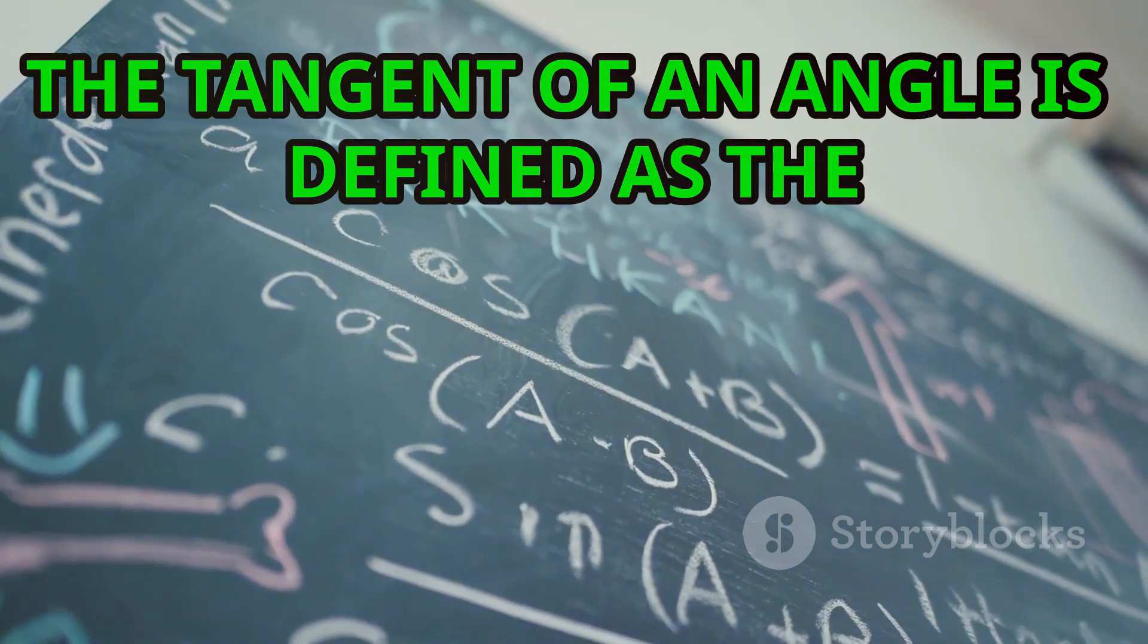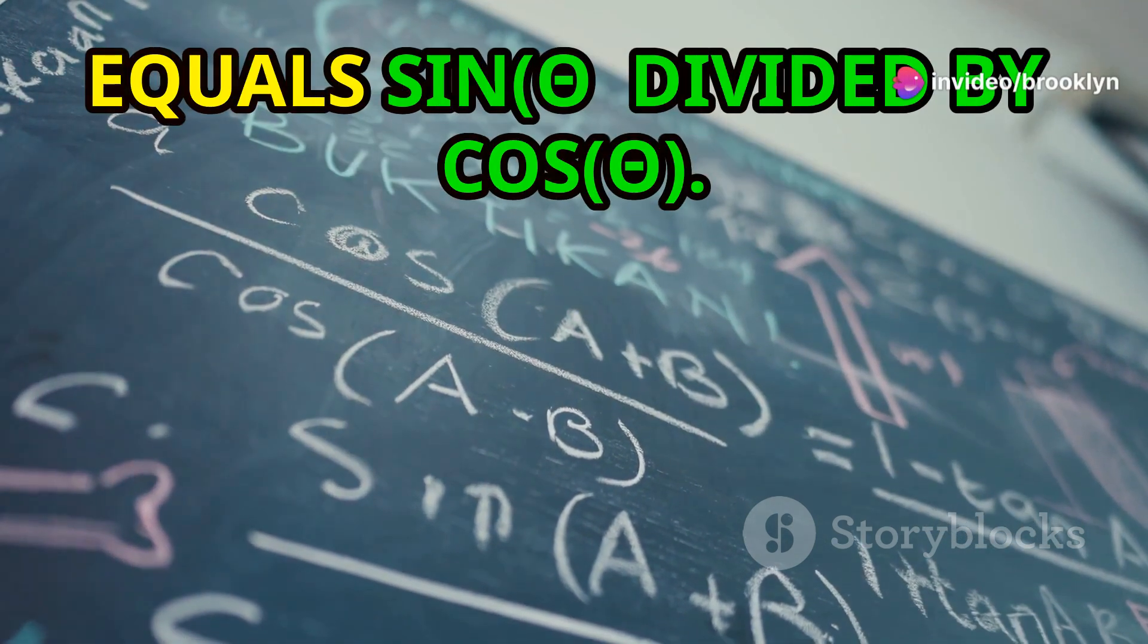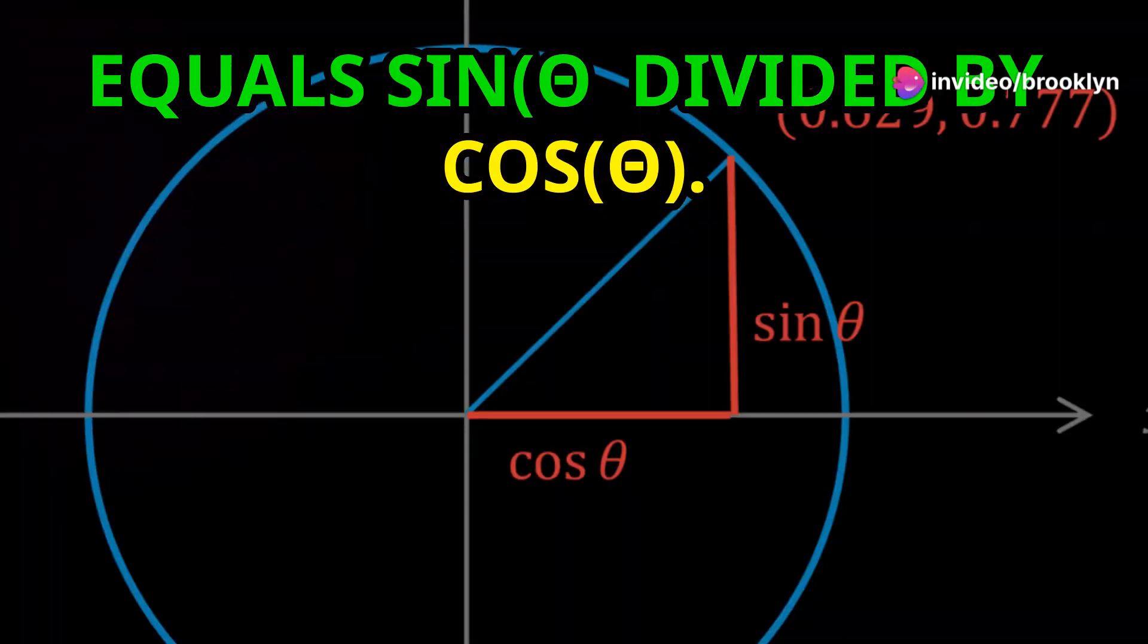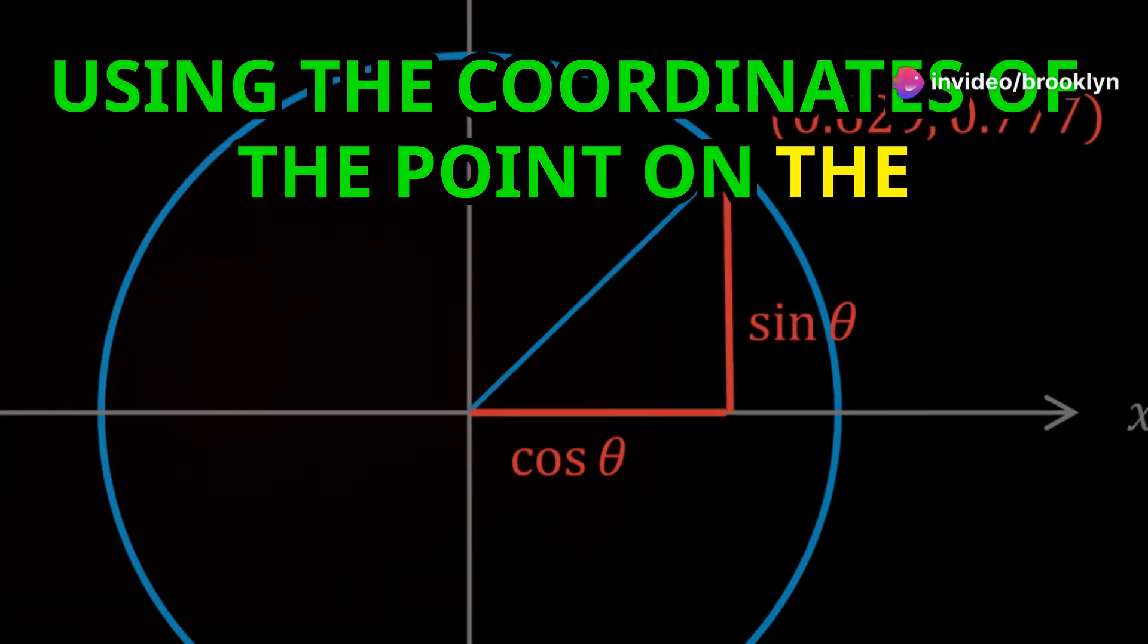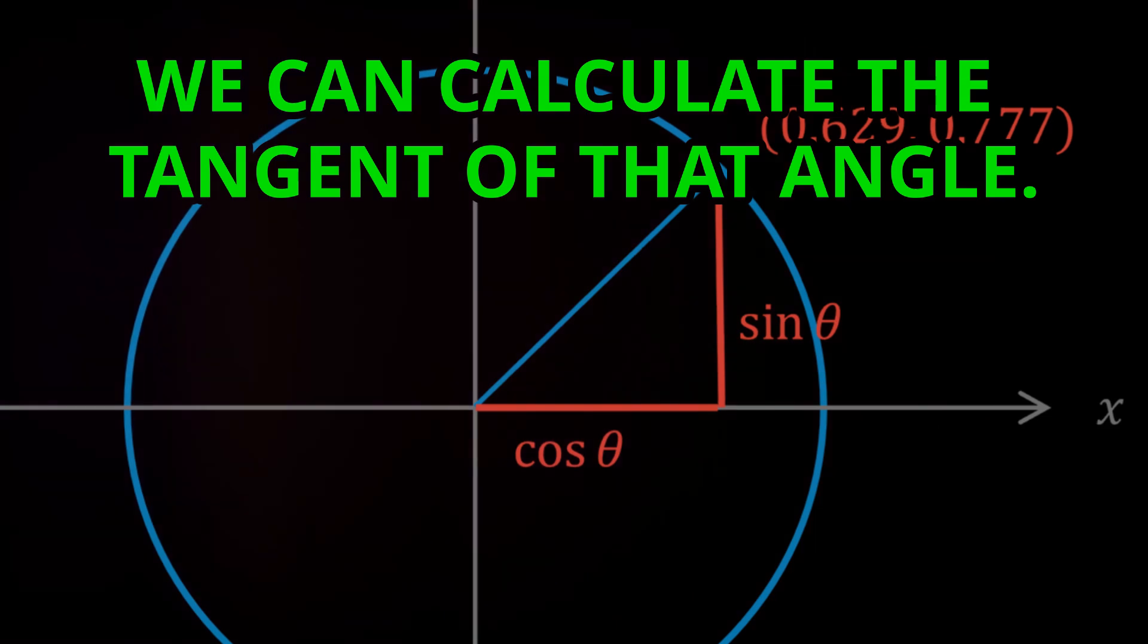These functions can be derived from the sine and cosine values. For example, the tangent of an angle is defined as the ratio of the sine to the cosine: tan θ equals sin θ divided by cos θ. Using the coordinates of the point on the unit circle corresponding to angle theta, we can calculate the tangent of that angle.